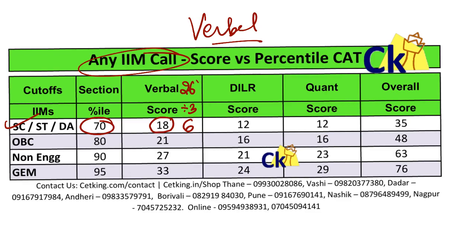With a 26-question verbal section, all you need is six questions correct for SC/ST/DA. For OBC/EWS, you need seven questions correct. Non-engineers need nine questions correct, and General/Engineer/Male category needs 11 questions correct. These are the four magic numbers to remember.